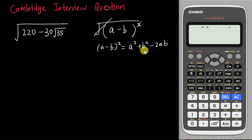From here I know a² and b² will both give me a whole number, because whenever I square it, it will give me a whole number. So I will assume a² + b² equals 220, and I will assume -2ab equals -30√35.